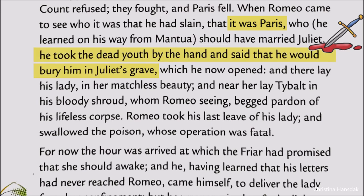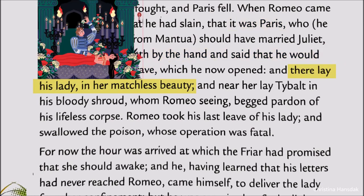Romeo took the dead youth by the hand and said he would bury him in Juliet's grave. He opened Juliet's grave, where his lady lay in her deathless beauty. Thinking his lady was no more and that it was useless for him to be alive, he took his last leave of her and swallowed the poison he had obtained from the pharmacist.